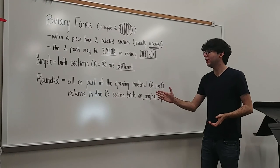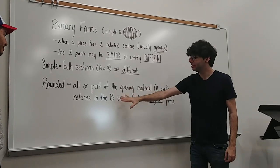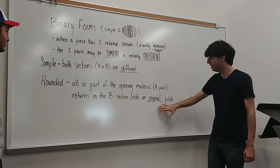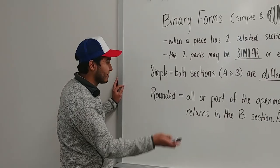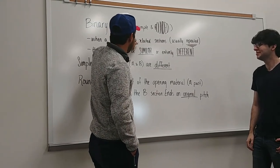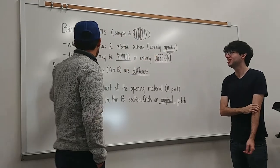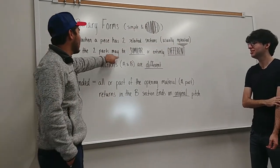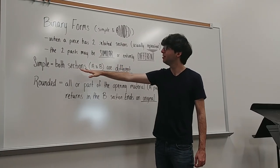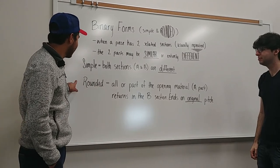Finally, you have rounded binary form, which is where a whole part of the opening in the A section returns in the B section, and then in the end you go back and play it, but all in the original key. So to recap, binary forms. When a piece has two related sections, they usually repeat. The two parts may be similar or entirely different. If A and B are different, then you have simple form, and if they're similar, they're rounded, not straight.